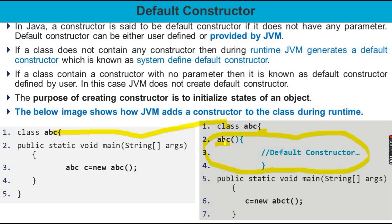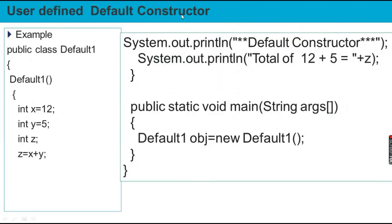The constructor class name is the same as the main return type — constructors do not have a return type. The default constructor is created by the default compiler with the same class name and no argument, which is also called a no-argument or default constructor.